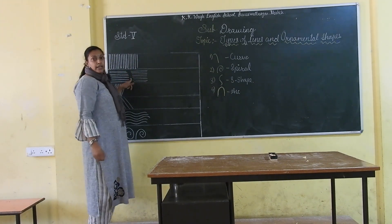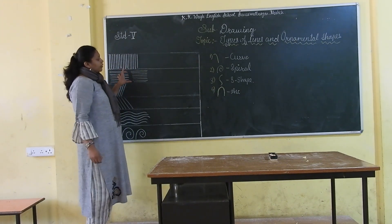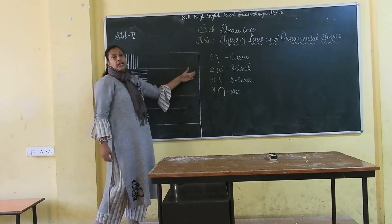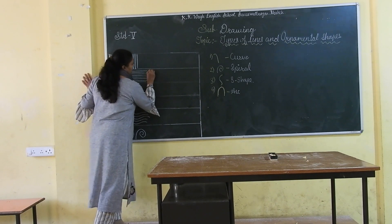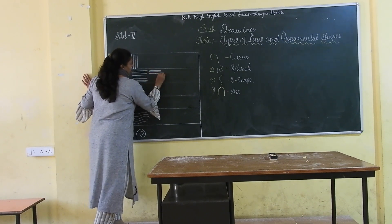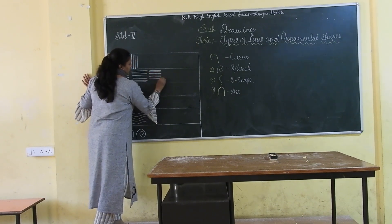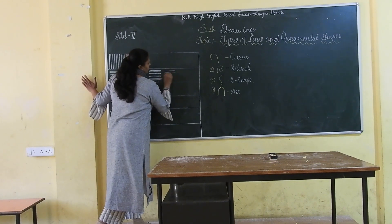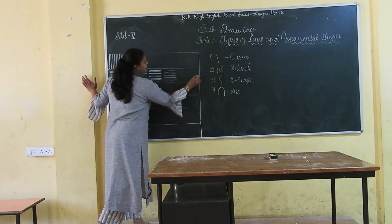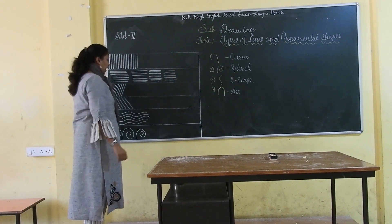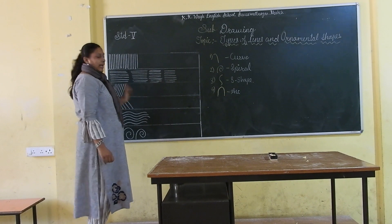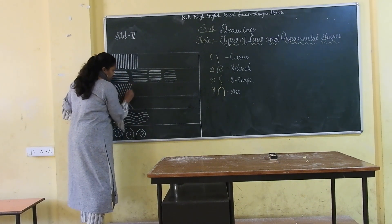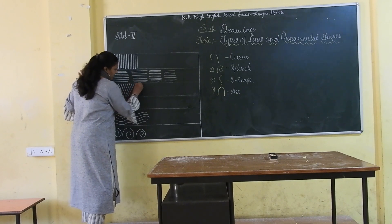Next, horizontal line — we have to make a group with small small strokes and complete it to the end. This way you have to make a group and complete it till end. Now here, standing line — here also we have to draw directly by our hand without using scale.